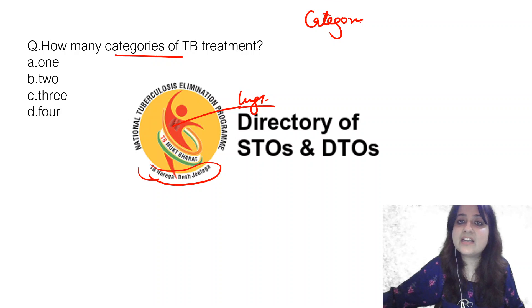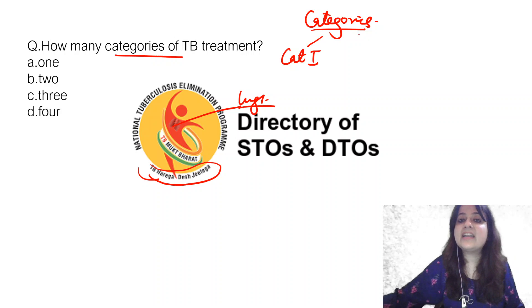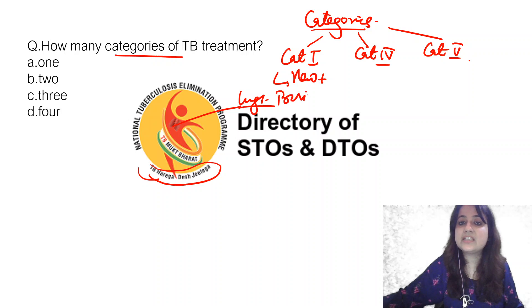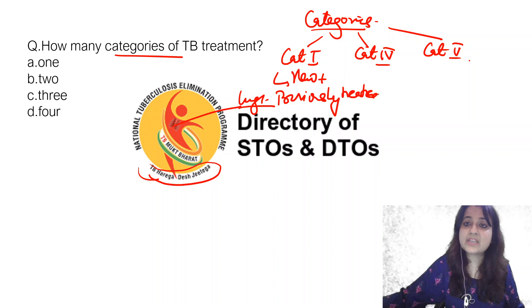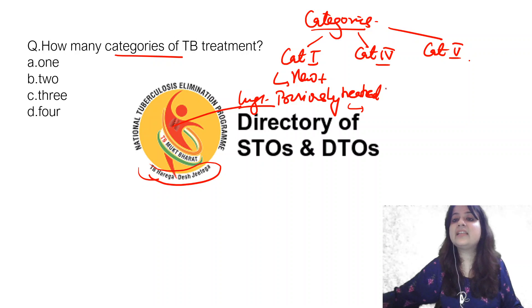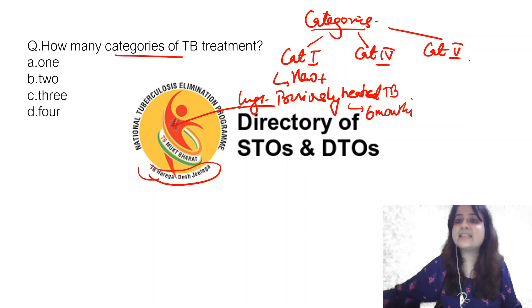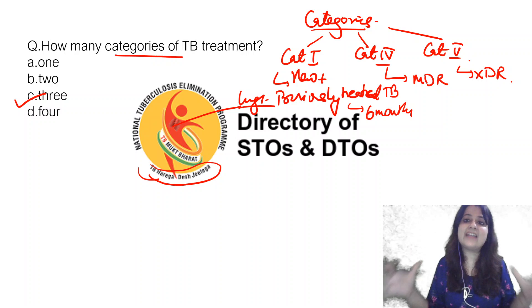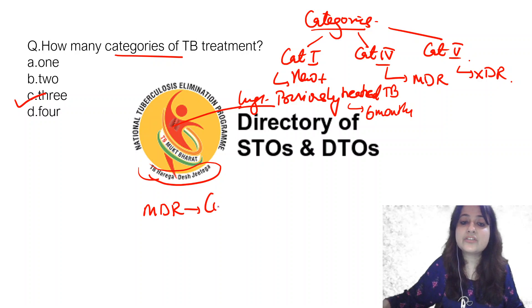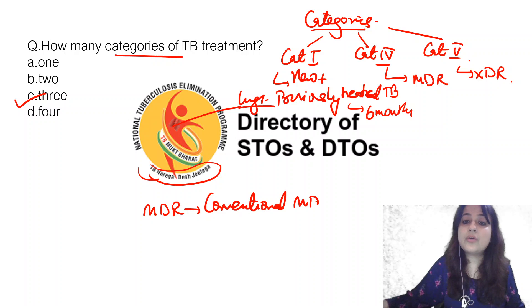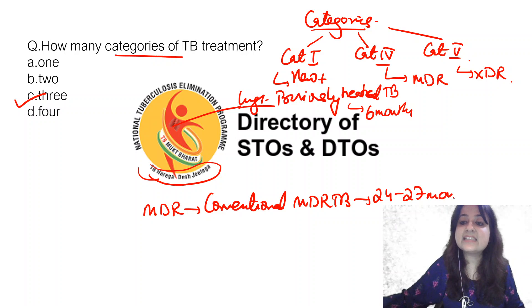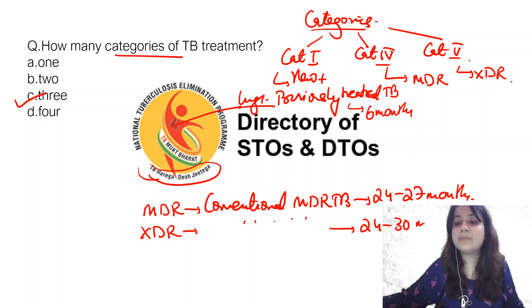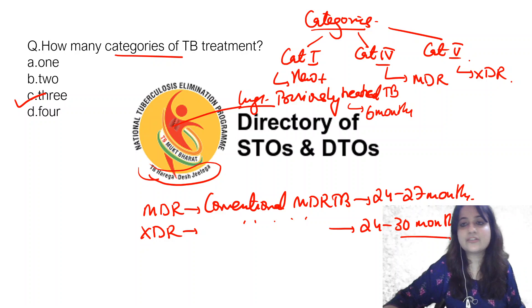Under the National Tuberculosis Elimination Program we have Category 1, Category 4, and Category 5. Category 1 is for new plus previously treated TB patients — earlier Category 1 and 2 were separate, but now they are combined. The duration of treatment is 6 months. Category 4 is for MDR TB and Category 5 is for XDR TB, so altogether there are 3 categories. For MDR TB, the conventional regimen duration is 24 to 27 months, and for XDR TB the conventional regimen is 24 to 30 months.